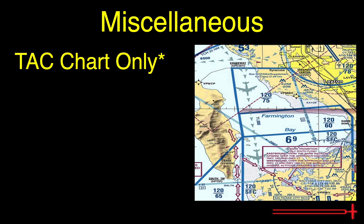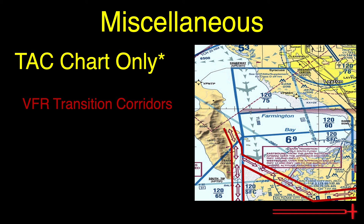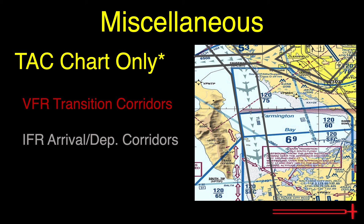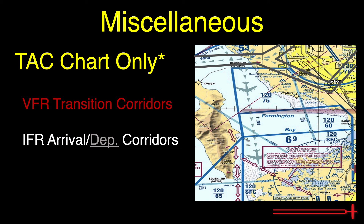The next two items appear only on TAC charts, not on the less detailed sectional chart. VFR transition routes through Bravo airspace are depicted by double-sided red arrows with instructions listed nearby and on the back of the chart. IFR arrival and departure corridors are shown as light gray chevrons, helping us avoid paths of large aircraft flying under IFR. It's a good idea to steer clear of these. Arrivals are depicted with an aircraft symbol; departure paths are depicted without one.